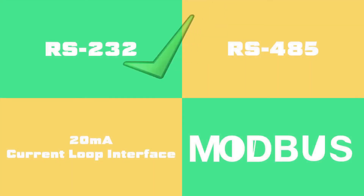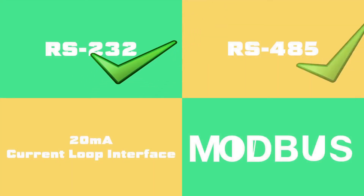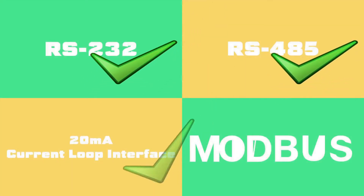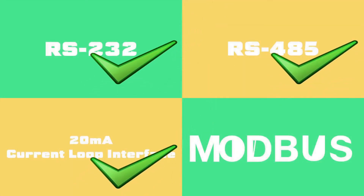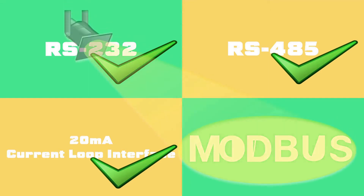Till now, in this series of industrial communication protocols, we have studied about RS-232, RS-485, and 20mA current loop. Now, we will study about Modbus protocol.